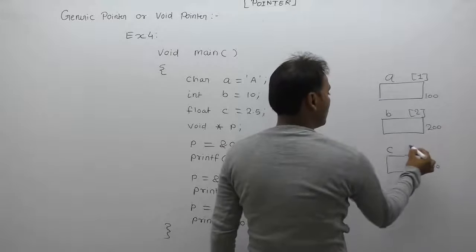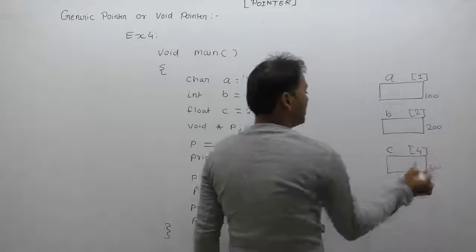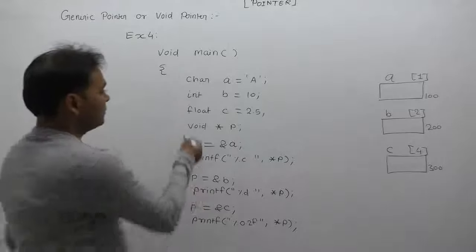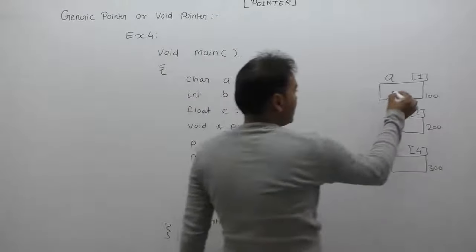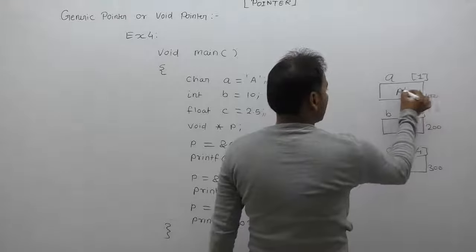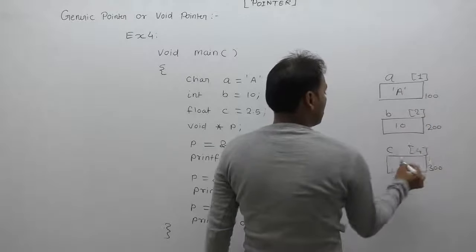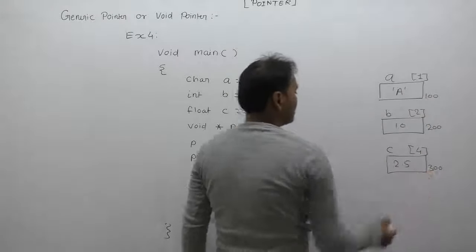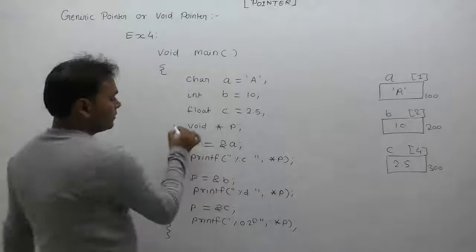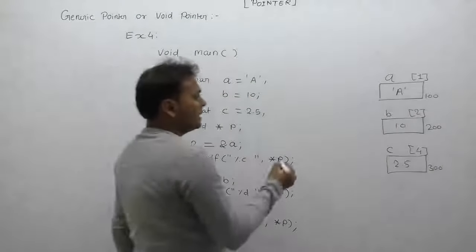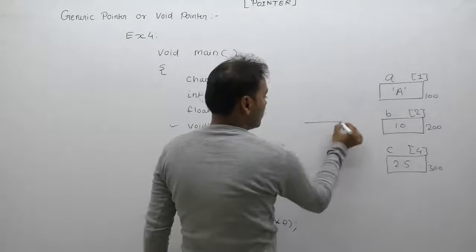What is the size of a? Size is one byte. This is the block of two bytes, block of four bytes because c data type is float. Initial value of a is character 'A', b value is 10, c value is 2.5. Next we are creating pointer variable p. Size of p is only two bytes.